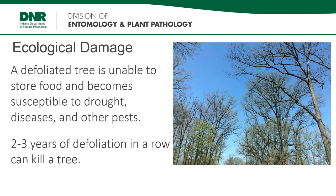But what does that defoliation do to the trees? Losing leaves takes away a tree's ability to store food and puts it under stress. Because this defoliation happens earlier in the year, most trees can put on a second flush of leaves. But doing so uses up reserve energy and makes the tree susceptible to environmental stress like droughts, diseases, and other pests. Two to three years of defoliation in a row can kill a mature tree.